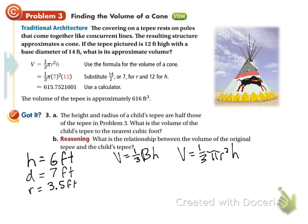V equals 1 third pi. Plug in our radius, so 3.5 squared. And our height is 6. On my calculator, I'm going to simplify that 3.5 first. 3.5 squared gives us 12.25. And they want it to the nearest cubic foot, so I don't need to keep pi in my answer.